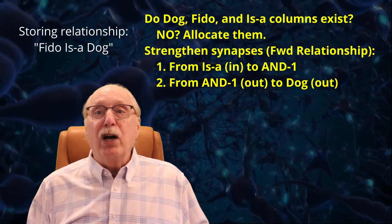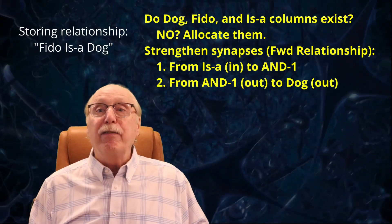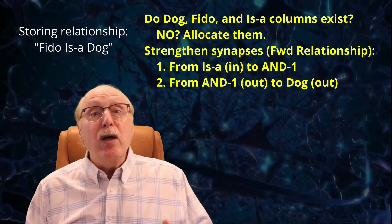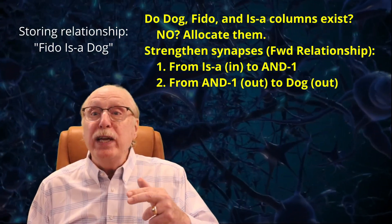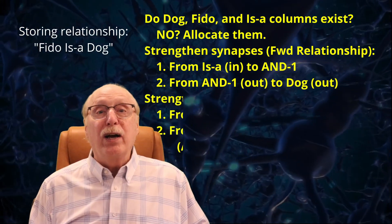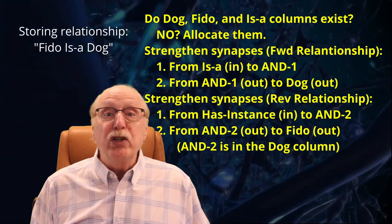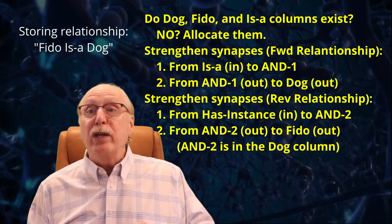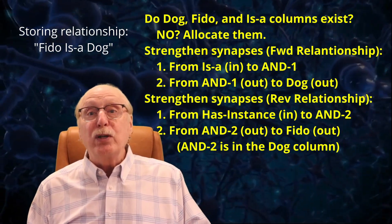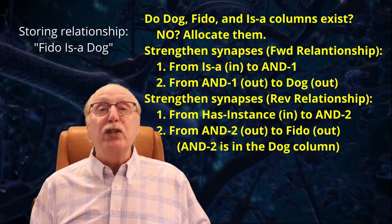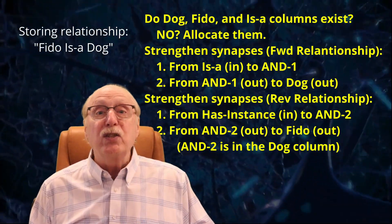When learning this relationship, we need to strengthen two key synapses, one from the ISA column to an AND gate in the FIDO column, and another from that gate to the OUT neuron in the DOG column. To make the inverse relationship work, we also strengthen a mirror connection from DOG to FIDO, with the relationship type set to IS instance of.